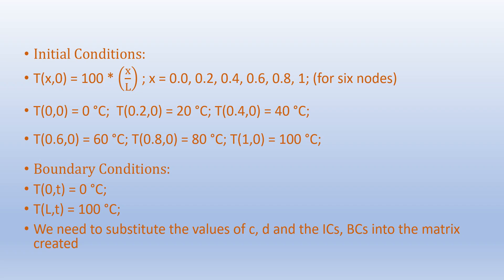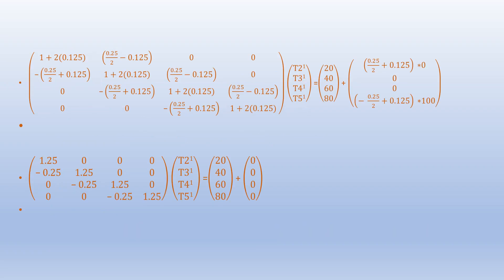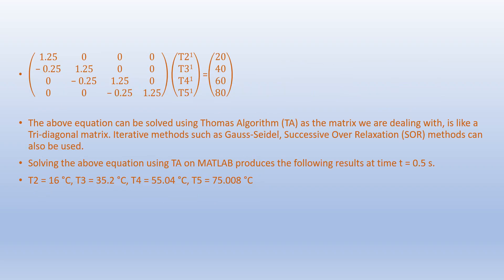Substituting these values of c, d, initial conditions, and boundary conditions into the matrix, we can simplify as shown. This tridiagonal matrix can be solved using methods such as the Thomas algorithm, or iterative methods such as Gauss-Seidel or successive over-relaxation.